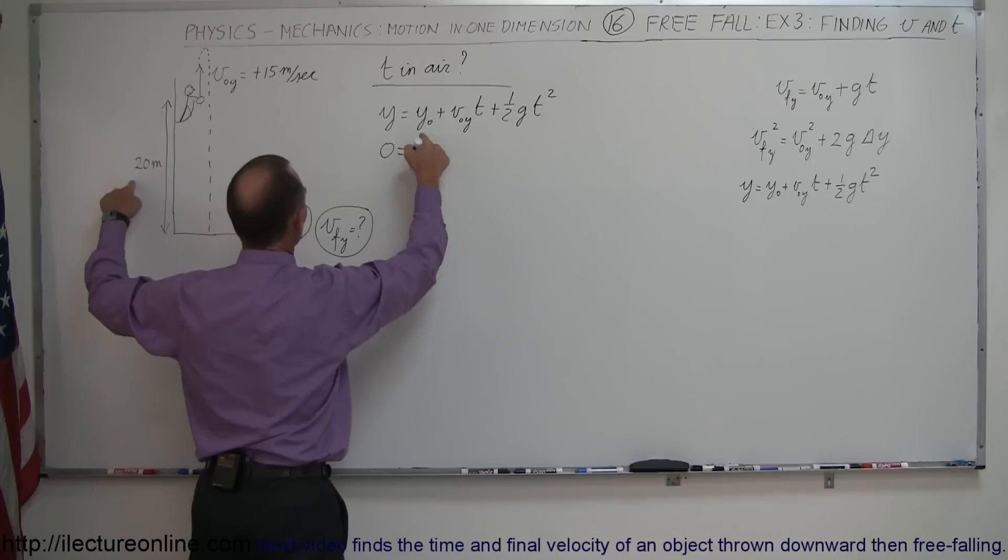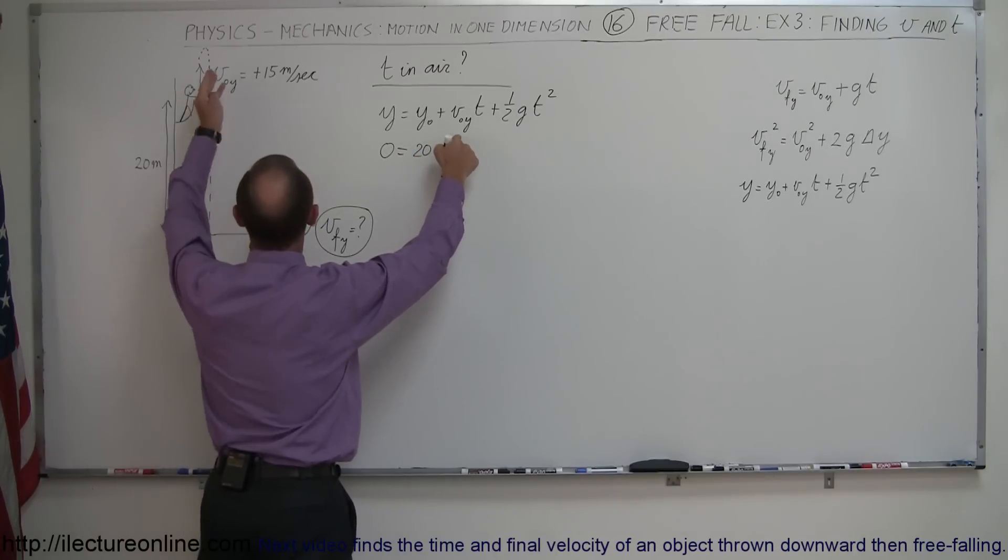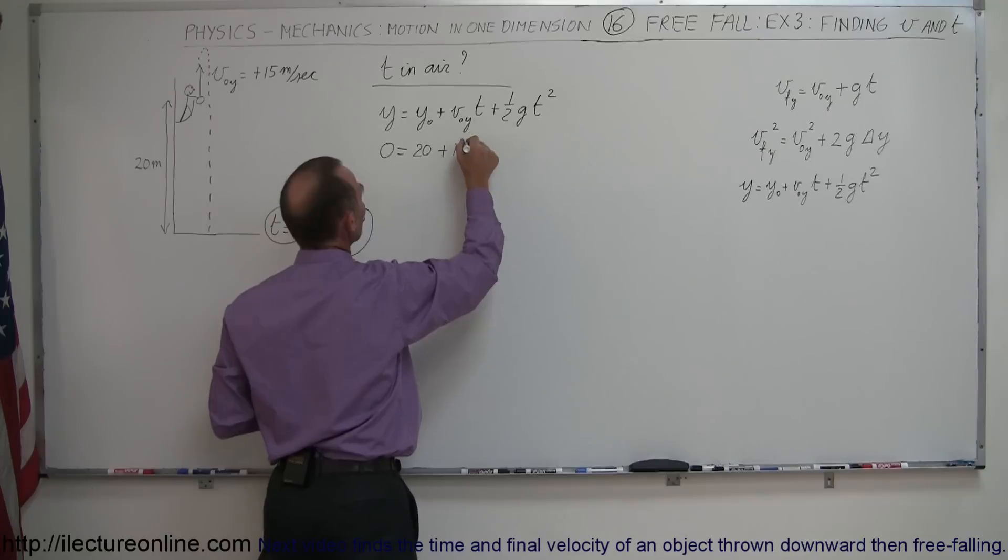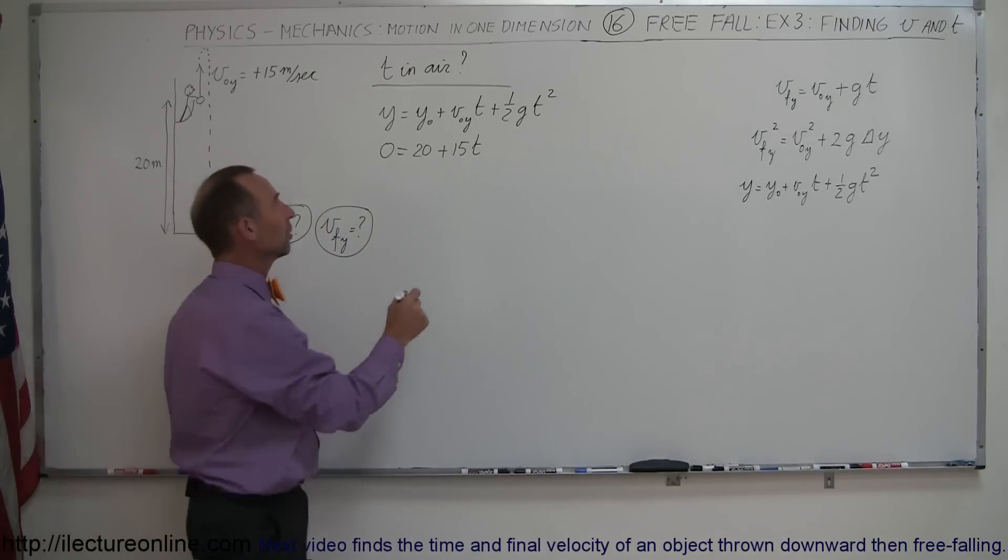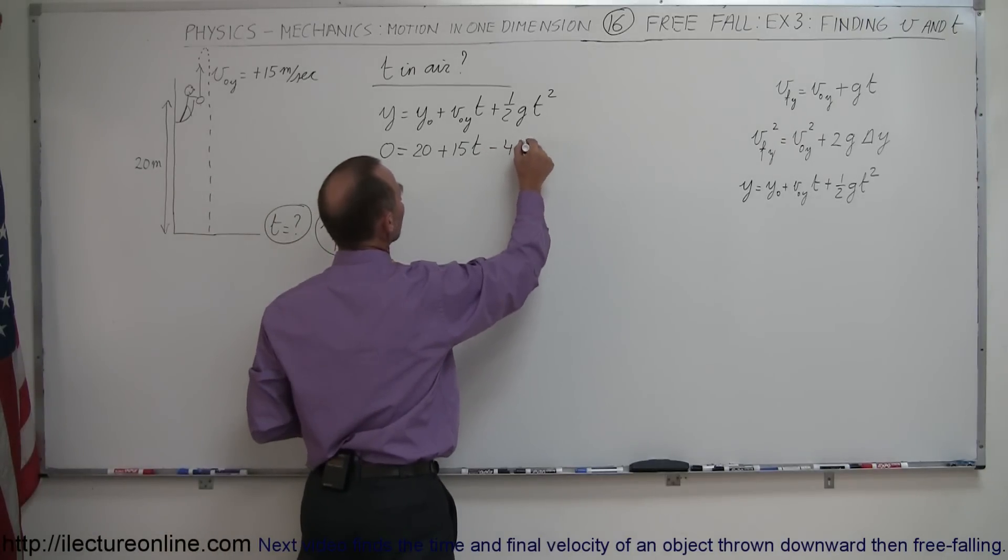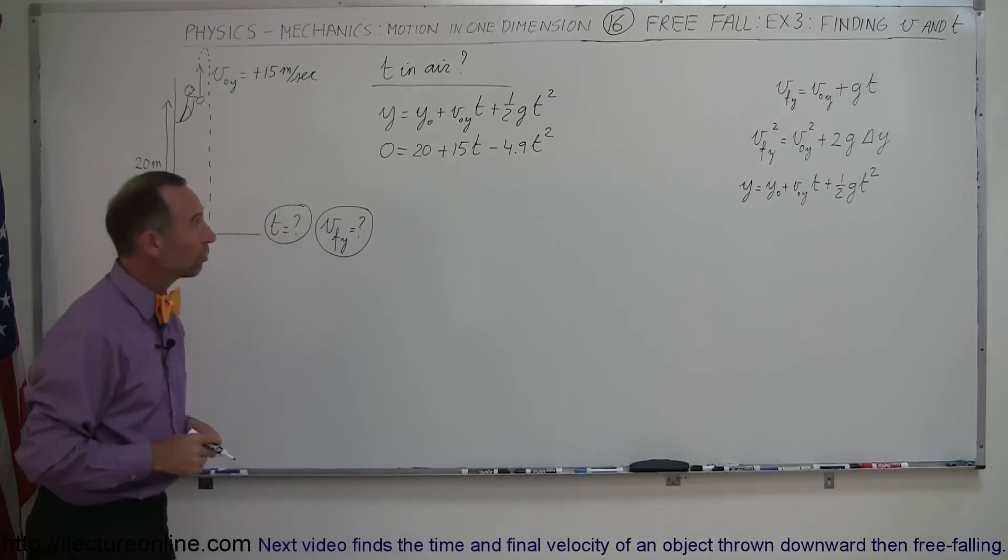Initial height it starts from a height of 20 meters plus v initial in the y direction which is a positive 15 meters per second times the time and of course one-half g, g being a minus 9.8 would be a minus 4.9 t squared and sure enough that is a quadratic equation.